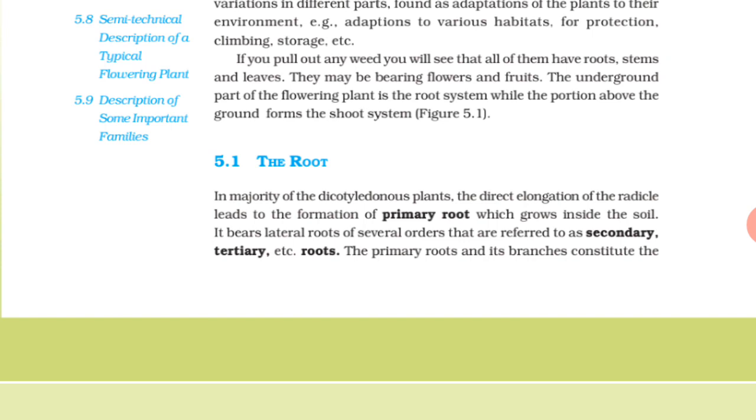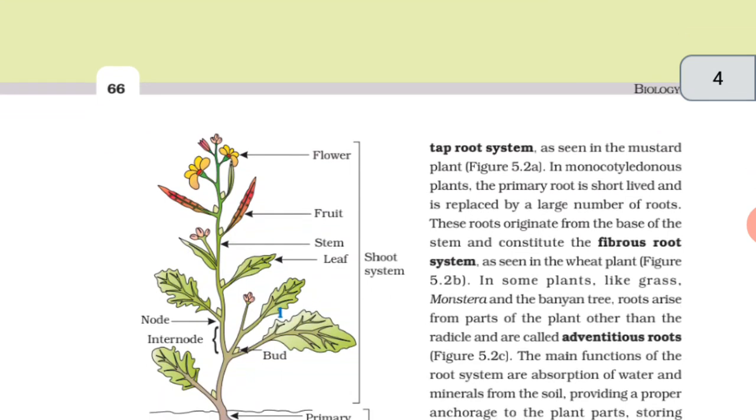The root. In majority of dicotyledon plants, the direct elongation of the radicle leads to the formation of primary root, which grows inside the soil. It bears lateral roots of several orders that are referred to as secondary, tertiary, etc. roots. The primary roots and its branches constitute the tap root system, as seen in the mustard plant.